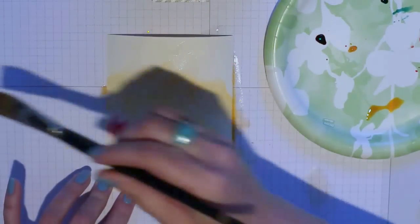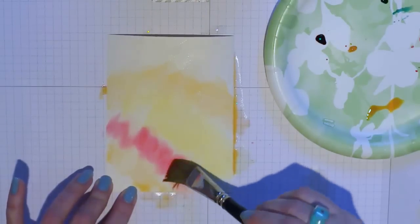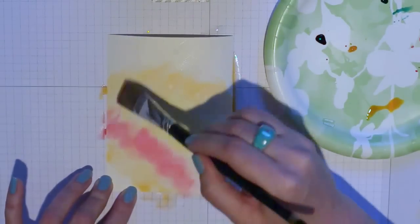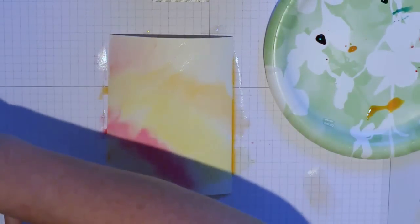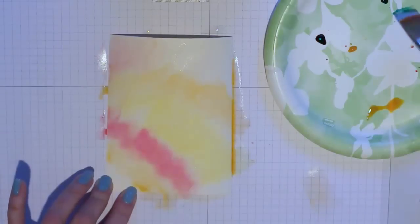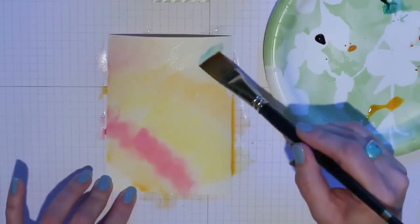The next color is Melon Mambo and I'm choosing these colors deliberately to match the blendabilities that I'm going to be using later on. So you can use whatever colors you like but it's nice to have an echo of the colors on the tissue paper in the watercolor wash in your background.